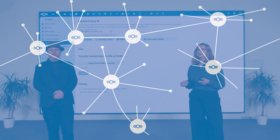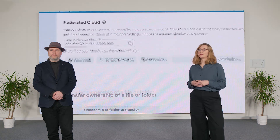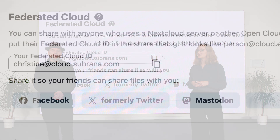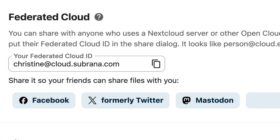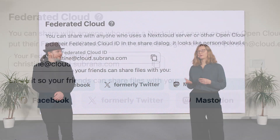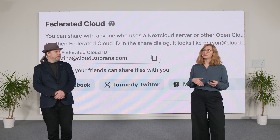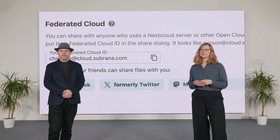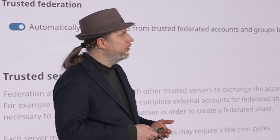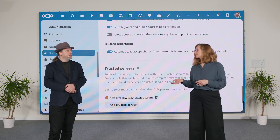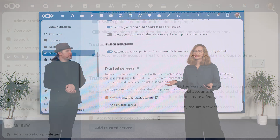You can find your Federated Cloud ID in your sharing settings. It's like an email address — username, the at sign, and the address of your Nextcloud server. If you enter my Federated Cloud ID in your share dialog, I get notified of the new share and you can accept it. So do I have to accept all these Federated Shares always? Yeah, just like enabling the normal shares.